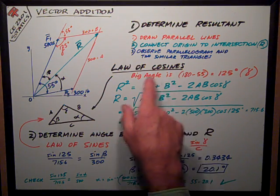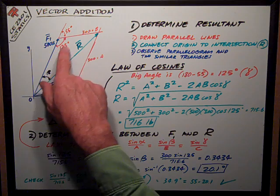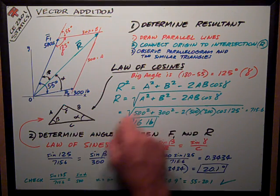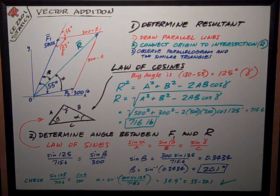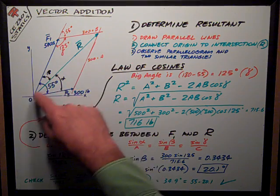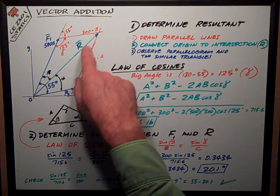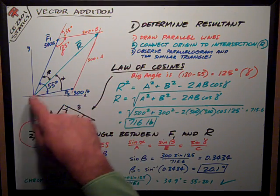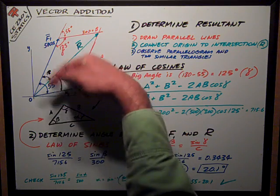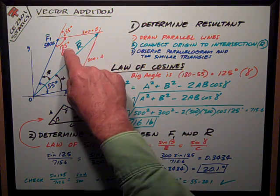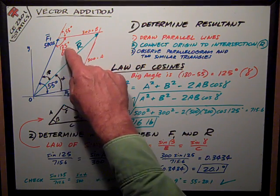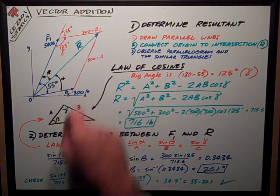Because the sum of those two angles has got to be 180 degrees, I can figure out what this angle is: 125 degrees, which is 180 minus 55. The resultant R divides my parallelogram into two similar triangles that are mirror images of each other. This angle is 125 degrees.